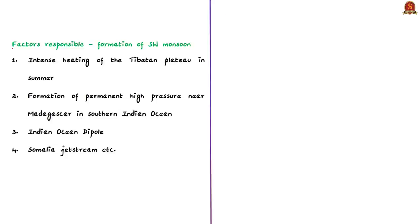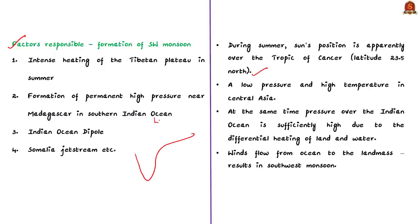During summer in the northern hemisphere, the sun's position is apparently over the Tropic of Cancer at 23.5° north latitude. Due to high temperatures and overheating, a low pressure area develops in central Asia where the Tropic of Cancer passes through. At the same time, pressure over the Indian Ocean is sufficiently high due to differential heating of land and water. This temperature variation between the sea and the landmass causes winds to flow from the ocean to the landmass, resulting in the southwest monsoon.